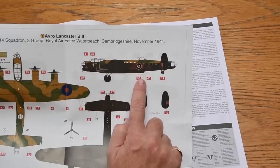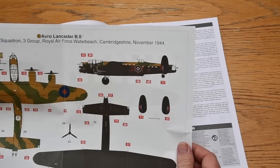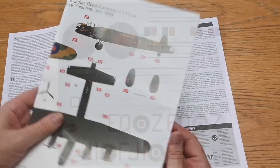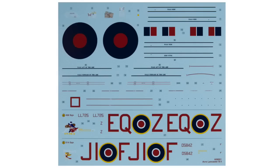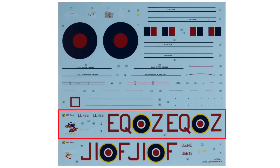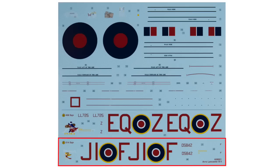The decal sheet is well printed, sharply defined and has rich colours. At the top are the common decals such as the instruments, maps for the navigator, roundels and fin flashes and all the stencils of which there are mercifully relatively few. Below these are the markings for the 408 Squadron aircraft, and at the very bottom are the markings for the 514 Squadron aircraft, which is what I'm building today.